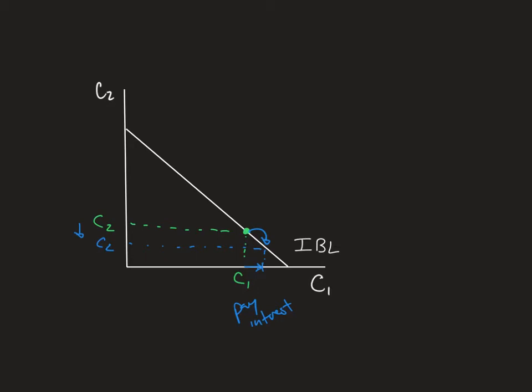Since we have the assumption that the interest rate is going to be the same whether we're borrowing or we're saving, either way that we move on this intertemporal budget line is going to be the same. And that's why we get this to be linear.